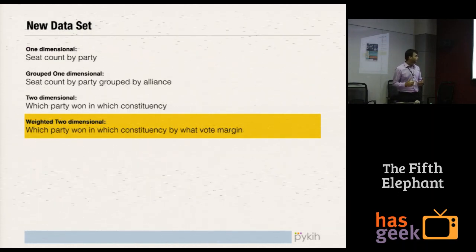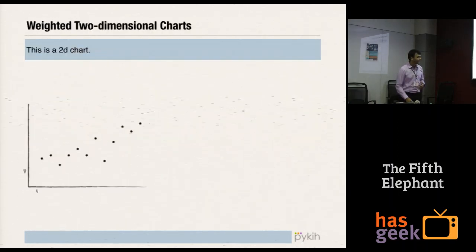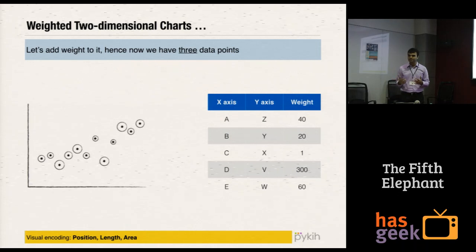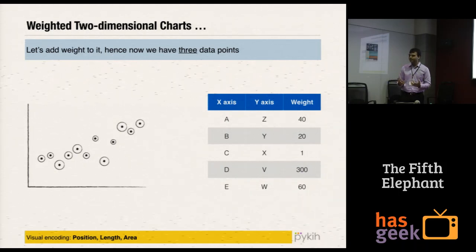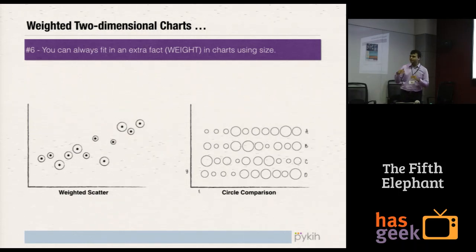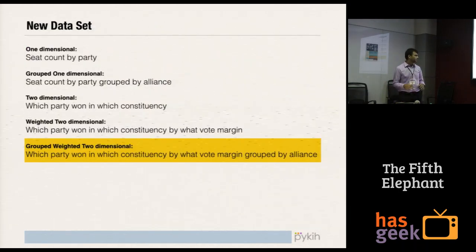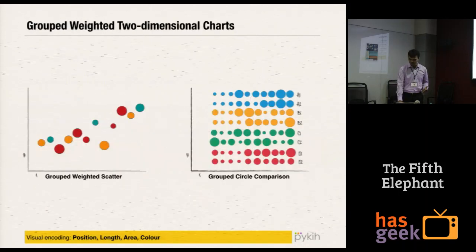Which party won in which constituency by what vote margin? We've added more data. We had this scatter plot and now we add weight — that is, vote margin — so it becomes a weighted two-dimensional chart. The concept of groups and weights are things you can keep using again and again; they communicate different things. You can always fit an extra fact into your standard charts called 'weight' and communicate it using size or area. This weighted scatter plot and a circle comparison chart are exactly the same. Adding group-by-alliance gives you a grouped, weighted, two-dimensional chart.